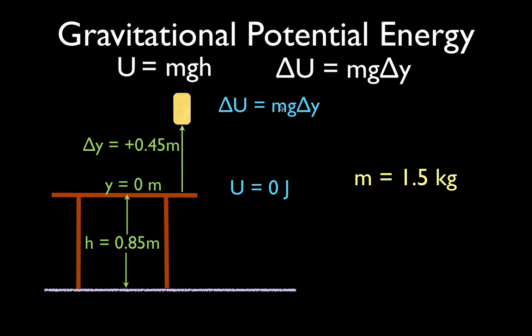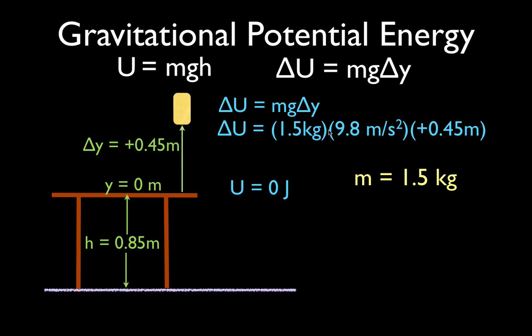All we have to do is take the mass, 1.5 kilograms, times the acceleration due to gravity, 9.8 meters per second squared, times the change in Y. That tells us that from this surface to this surface, we have increased the potential energy of that object by 6.6 joules.